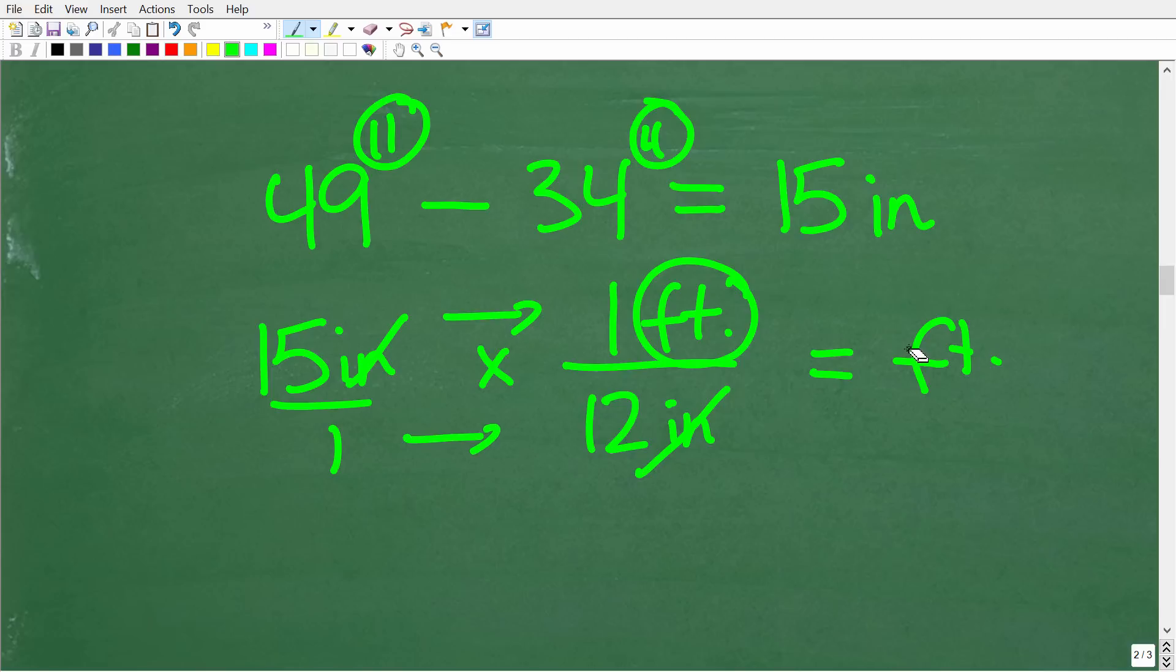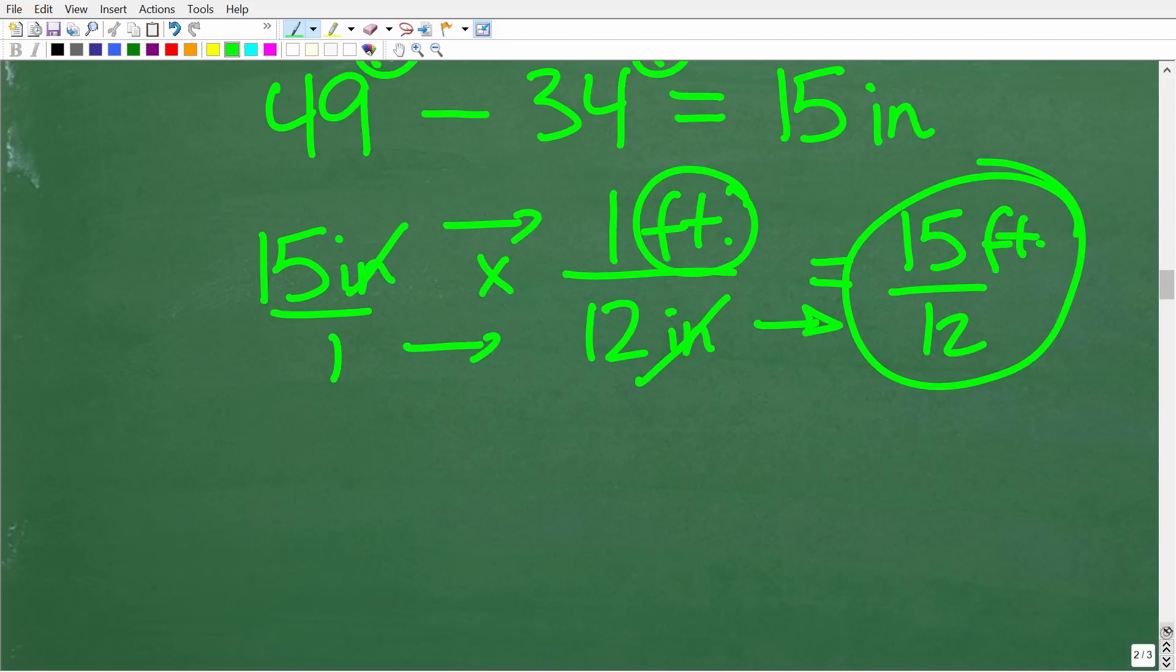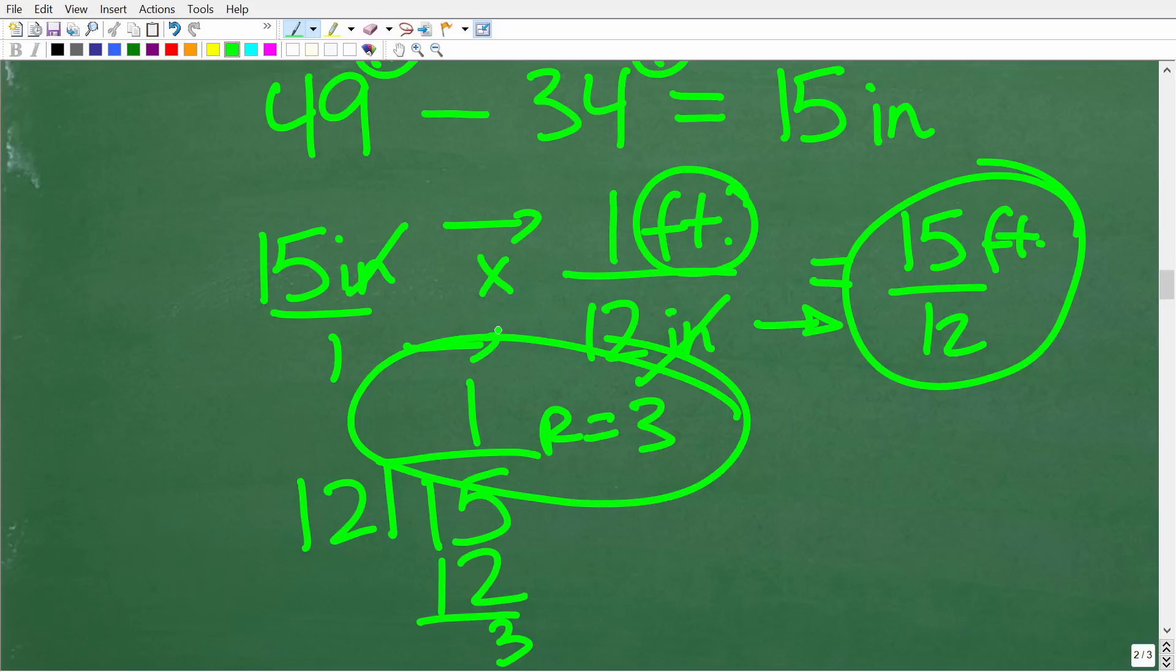So we're going to end up with 15 feet over 12. So now we need to do a little bit of division to get this down to feet and inches. So all we need to do here is divide 15 by 12 and we'll get our answer in feet, but we'll also have a remainder and that remainder will be in inches. So 15 divided by 12 is what? Well, 12 goes into 15 one time. One times 12 is 12. And here we have a remainder of three, which is going to be our inches. So here again, our answer is one foot, three inches.